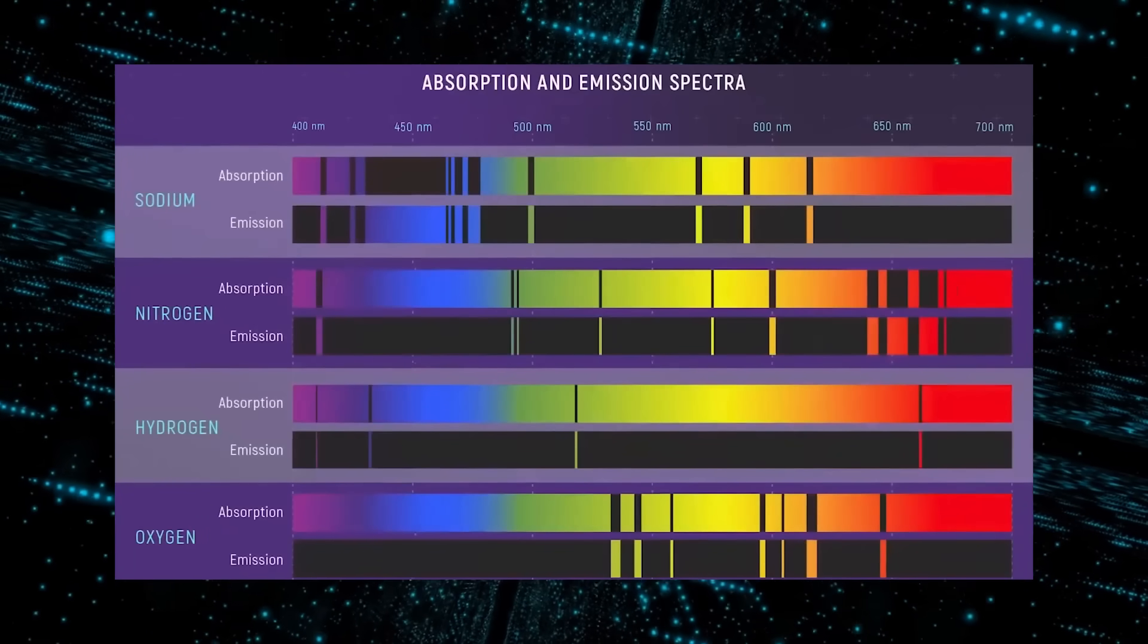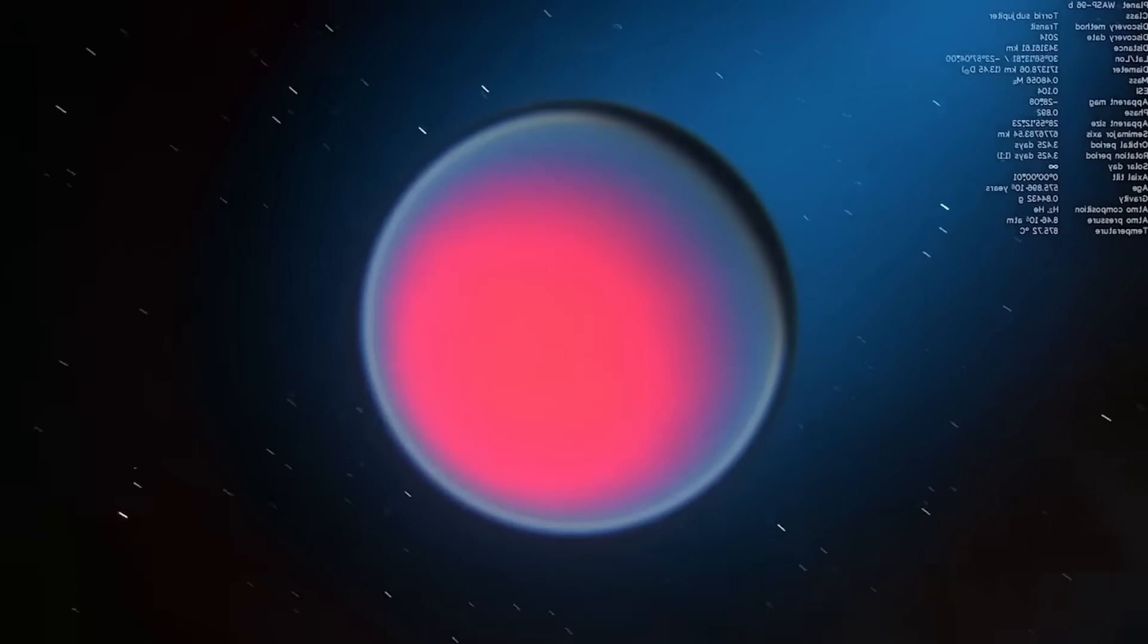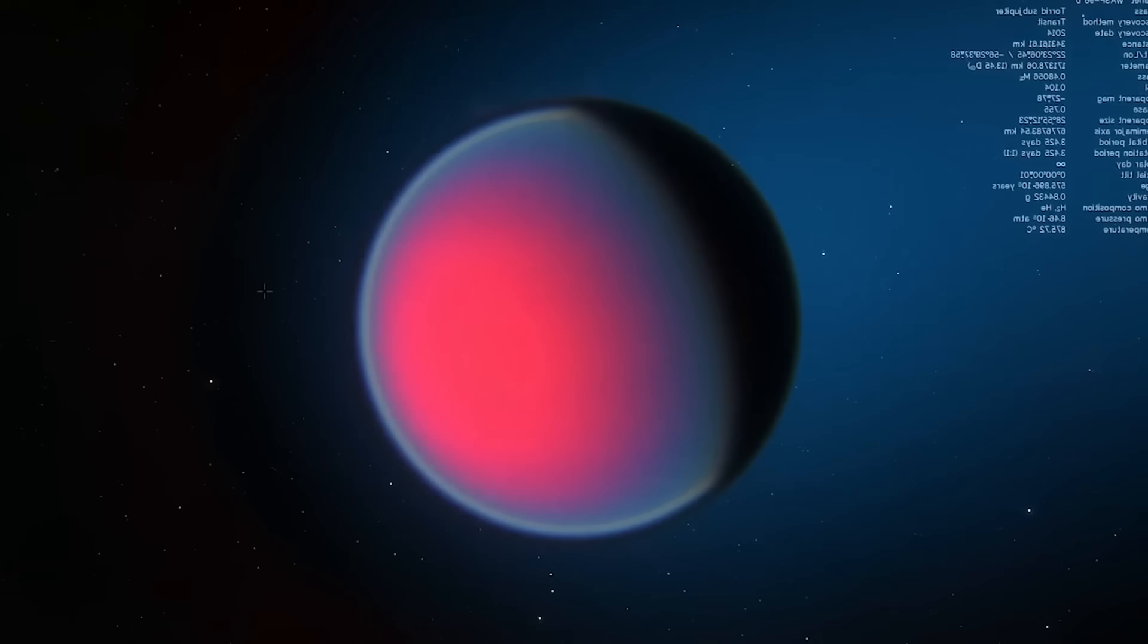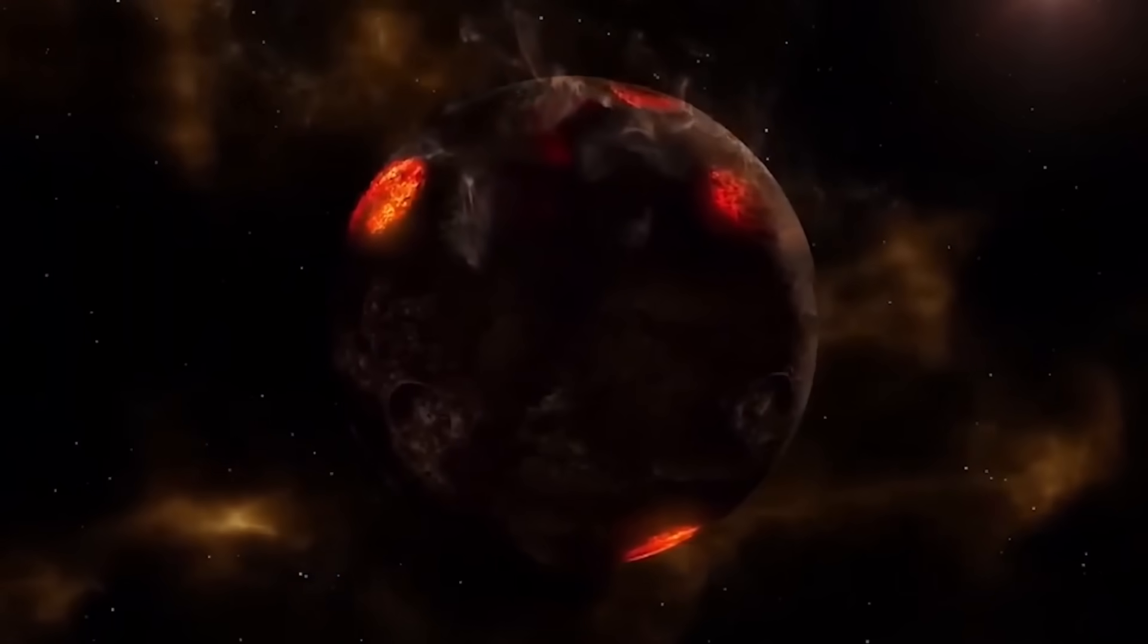Water and other essential molecules like oxygen, methane, and carbon dioxide, which are not immediately apparent in the WASP-96b spectrum but should be detectable in other exoplanets, are particularly sensitive to this portion of the spectrum.